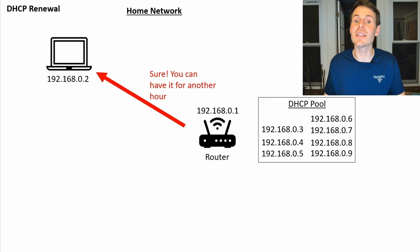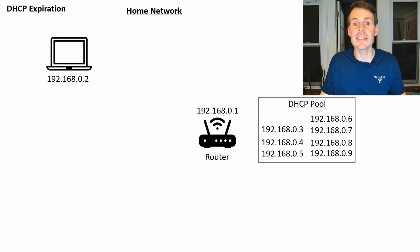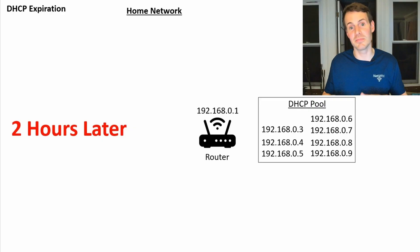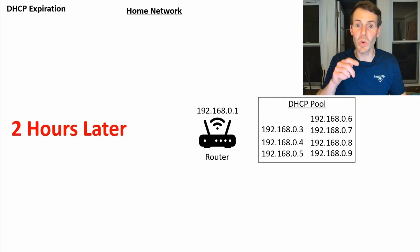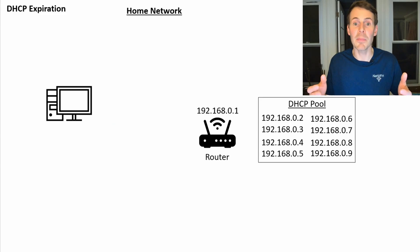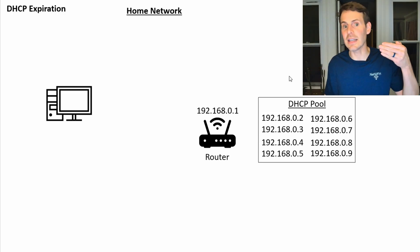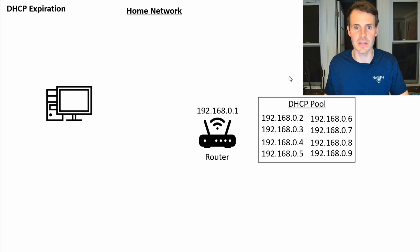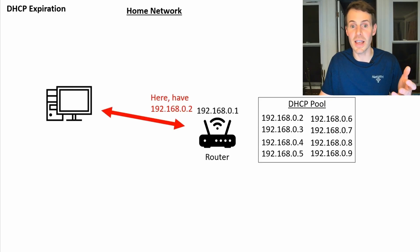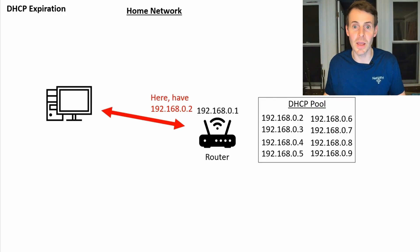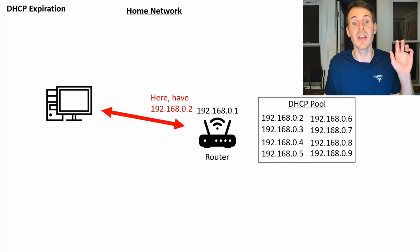Let's see what this looks like. Say the laptop disconnects from the home network for two hours — greater than the lease time. It had the 192.168.0.2 IP address with a one-hour lease, but now we've exceeded that. So this IP address goes back into the DHCP pool because the lease expired and the laptop didn't renew it. Now let's say a desktop joins the home network — it goes through the same process and gets offered the .2 IP address, which is now free again, and that IP address gets reassigned to the desktop.